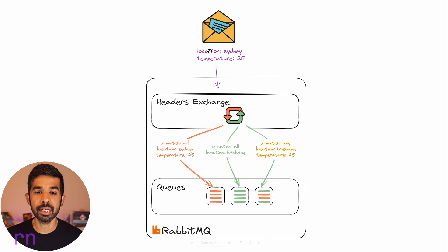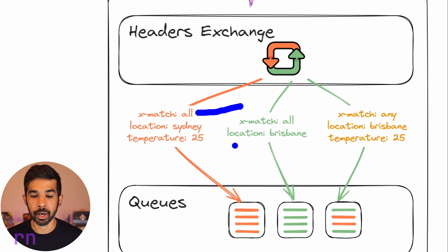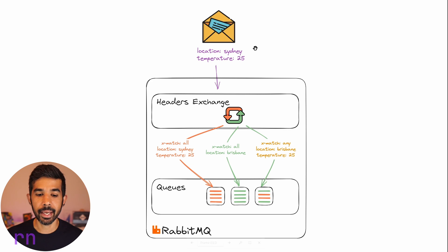For example, if a message has two header attributes and the binding has x-match set to 'all', you can specify additional header attributes like location must be Sydney and temperature must be 25. Since it's 'all', both headers must match the incoming message. When only one header is specified with x-match 'all', it must match that one header. When x-match is 'any', a message with either location as Brisbane or temperature as 25 gets selected into the queue.